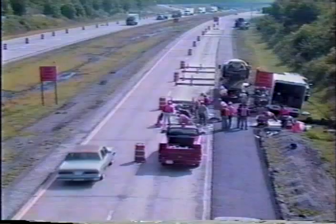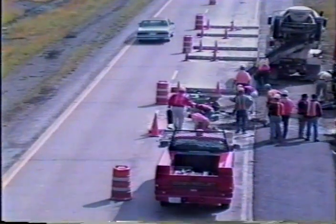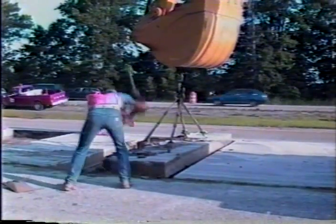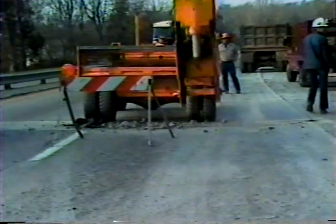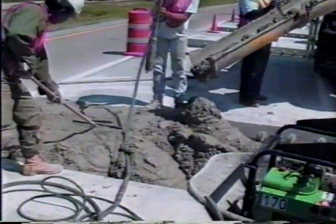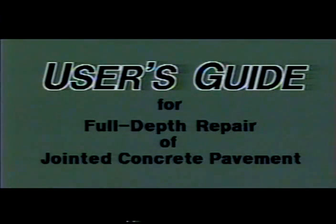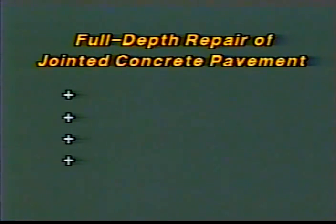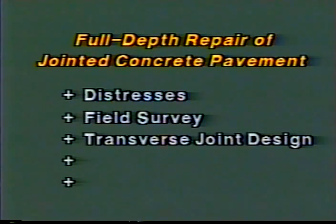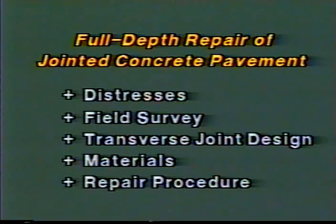Over the years, it seems we've tried just about every option for making full-depth repairs in jointed concrete pavement. Some of the options have worked great, others not so great. The purpose of this program is to pass along SHARP's findings under the C206 project. The user's guide contains all the information in this videotape as well as specification guidelines. The findings can be explained best by covering five major topics: distresses requiring full-depth repair, field survey, transverse joint design, materials, and repair procedure. We'll start with distresses.